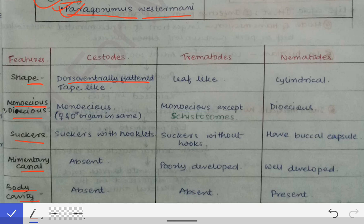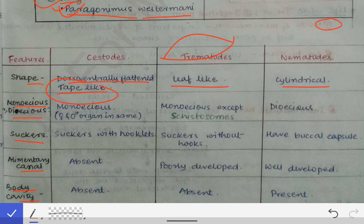Cestodes are dorsoventrally flattened and hence tape-like. Trematodes are leaf-like. Nematodes are cylindrical, just like the earthworm. You have seen the earthworm — they are cylindrical, and similarly the nematodes are also cylindrical.